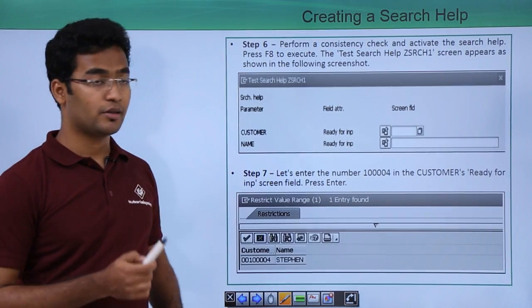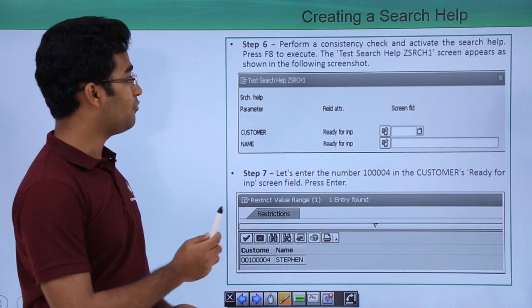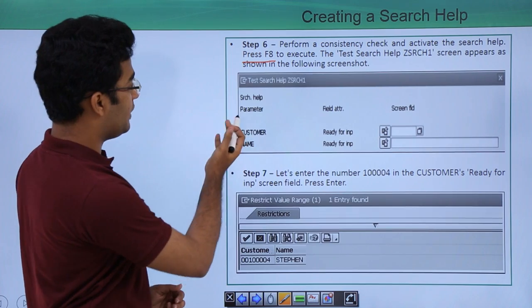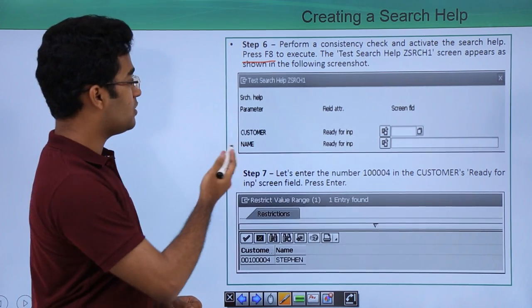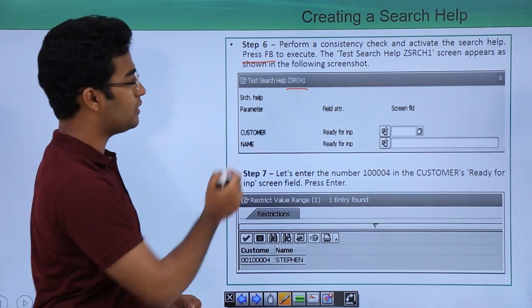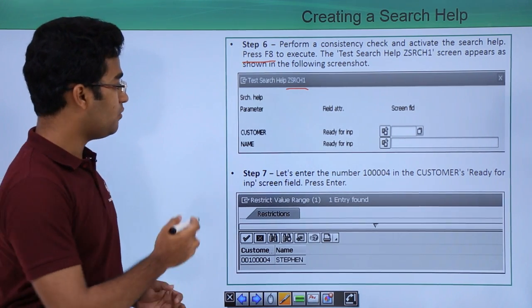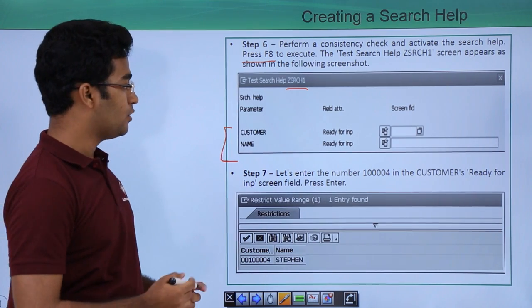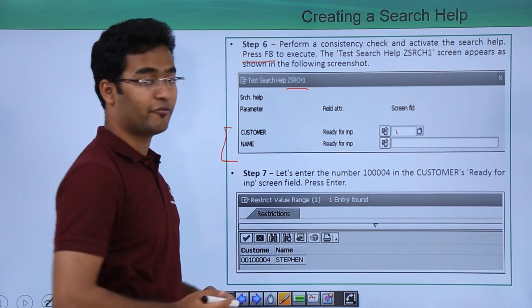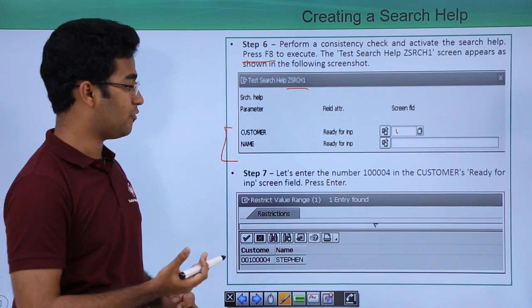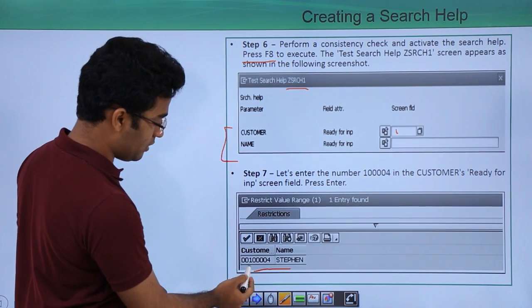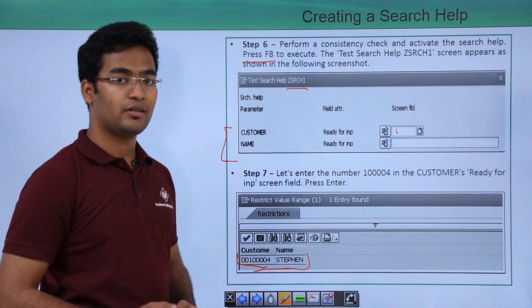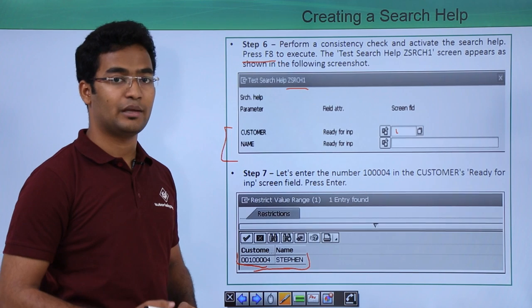Now we have to perform a consistency check and activate our search help. After activating it, we execute it by pressing the F8 key. We then get the test search help screen with the name of our search help — in this case ZSRCH1. We see two fields, customer and name, based on what we provided in the parameter area. If we put our cursor and press F4, we get a list of customers and their names.